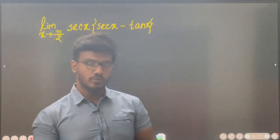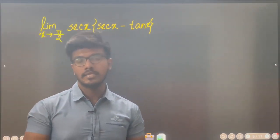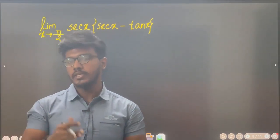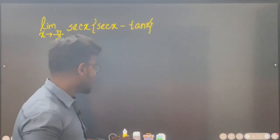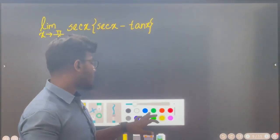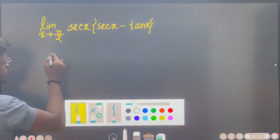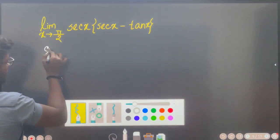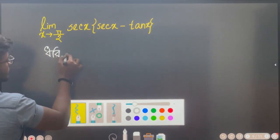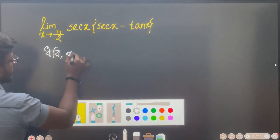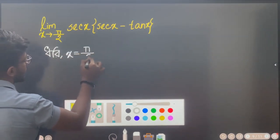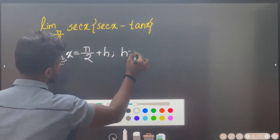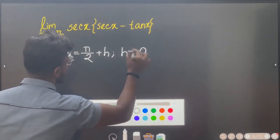x tends to pi by 2. This is the same value — x is pi by 2. So this is the problem. If we have the problem, we have the variable tends to 0. We have the first target. x is pi by 2 plus h, which means h tends to 0.